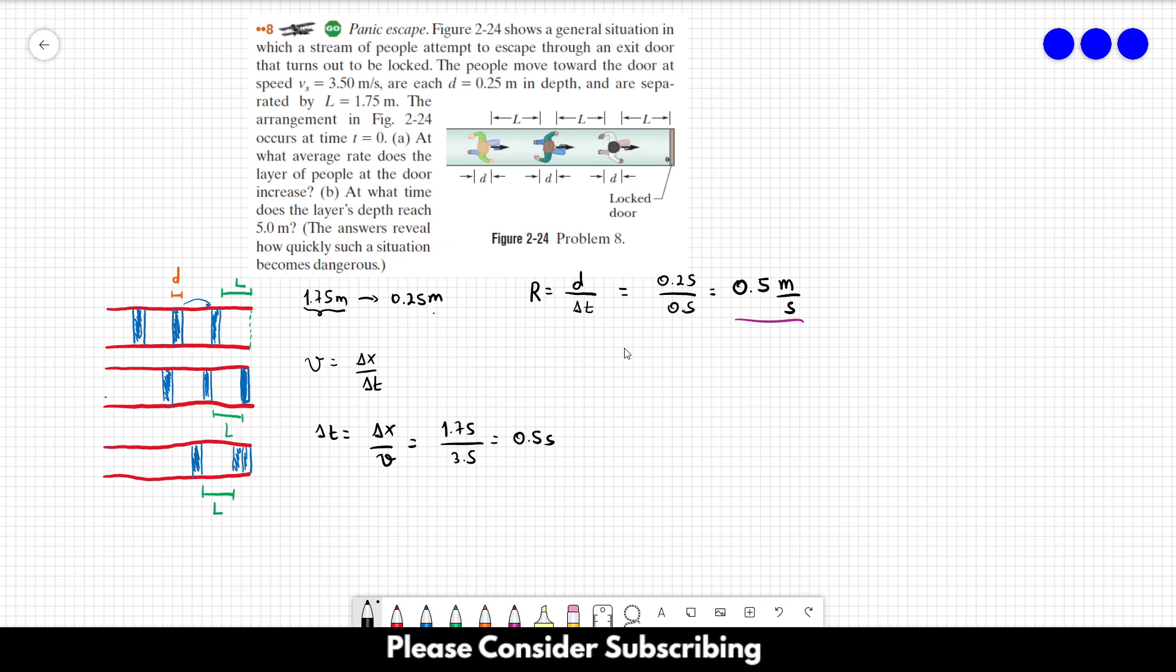Letter B. At what time does the layer's depth reach 5 meters? That's pretty simple, because we know that every second the layer increases 0.5 meters. So if we want 5 meters, we need 10 seconds. The answer of letter B is 10 seconds.